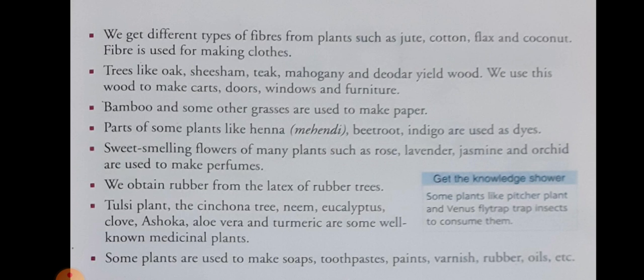Next, trees like oak, shisham, pea, mahogany, and deodar, they yield wood. We use this wood to make carts, doors, windows, and furniture. Bamboo and some other grasses are used to make paper.